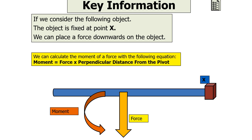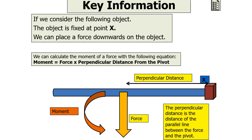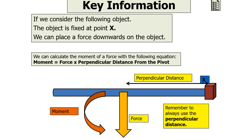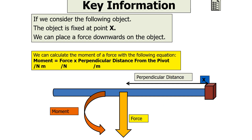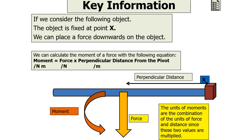We can calculate the moment of a force with the following equation: moment is equal to force times by perpendicular distance from the pivot. The perpendicular distance is the distance of a parallel line between the line of action of a force and the pivot. It's always important to use the perpendicular distance when calculating the moment. The units of moments are Newton-meters, because force is in Newtons and perpendicular distance is in meters, and these two values are multiplied together.